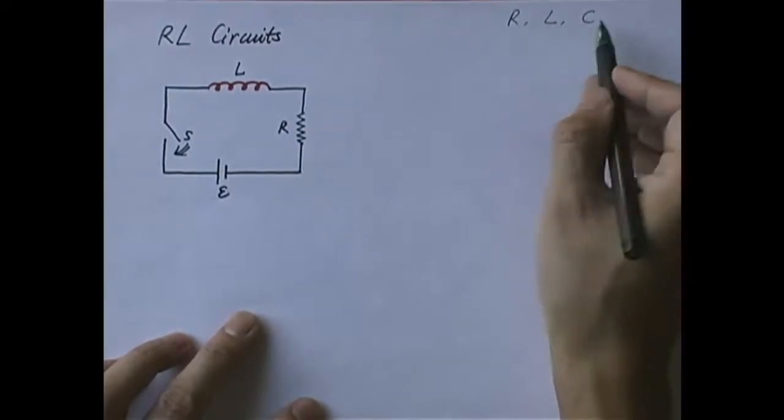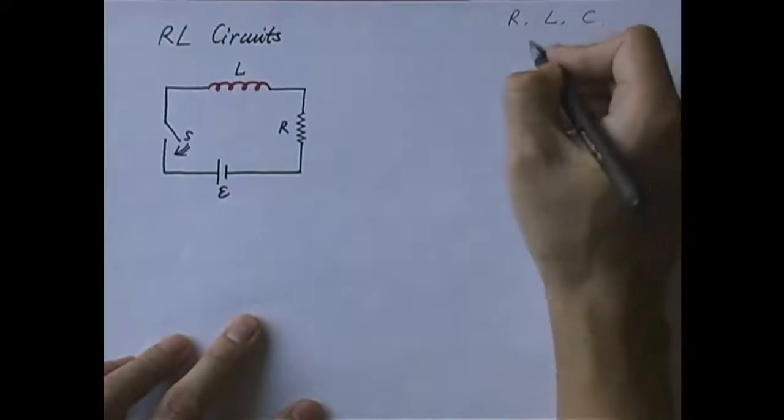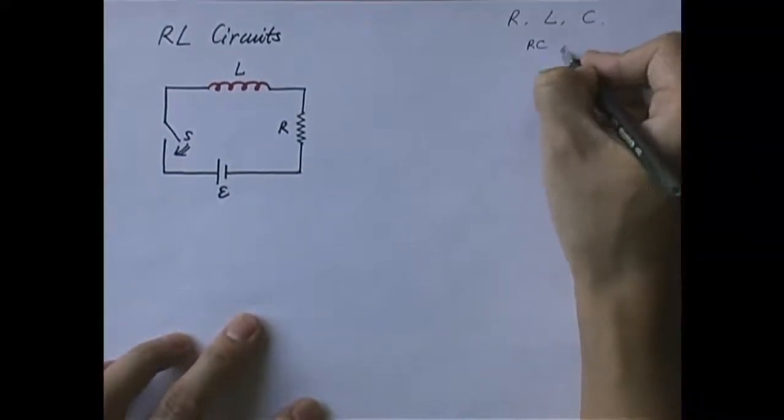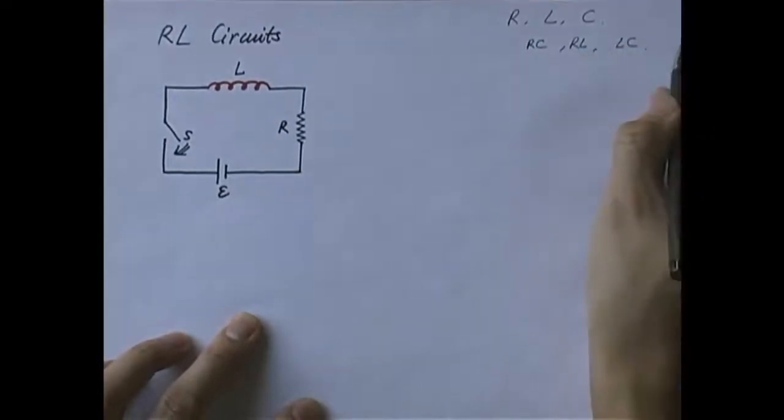Or we can also combine only two of these three together in a circuit. If you take two out of three, how many combinations do you have? Well, you have RC, you have RL, and you have LC, right? These are the three possibilities.